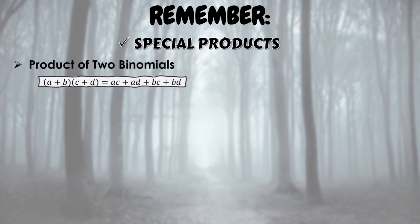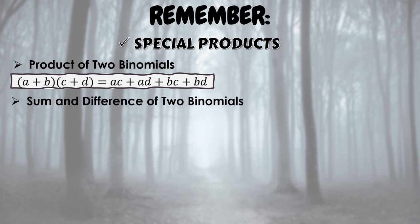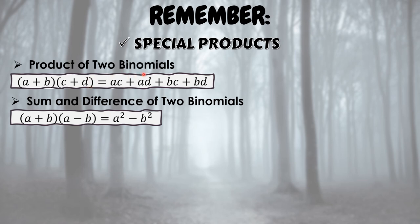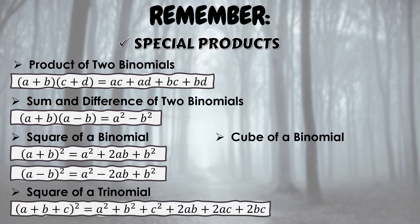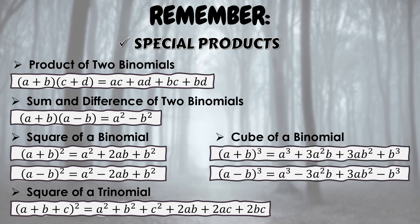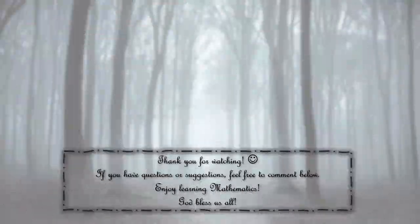To summarize the special products: (1) Product of two binomials using the FOIL or ice cream method; (2) Sum and difference of two binomials — shortcut: square the first term minus the square of the second term; (3) Square of a binomial; (4) Square of a trinomial; (5) Cube of a binomial using two formulas. Hopefully this video helped you with your lesson on special products. Thank you for watching — if you have questions or suggestions, feel free to comment below. Enjoy learning mathematics. God bless us all.